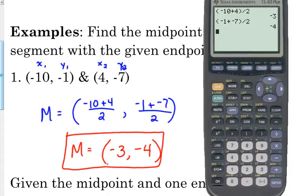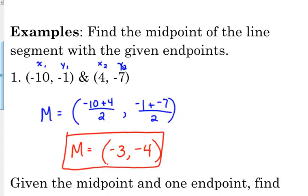Just to get us thinking about the application here — we're getting ready to talk about the equation of a circle. So these two points could be the endpoints of our diameter, and the midpoint would be the center of our circle. Be thinking about it in those terms: these two points are the endpoints of the diameter, and the midpoint is the center of the circle.